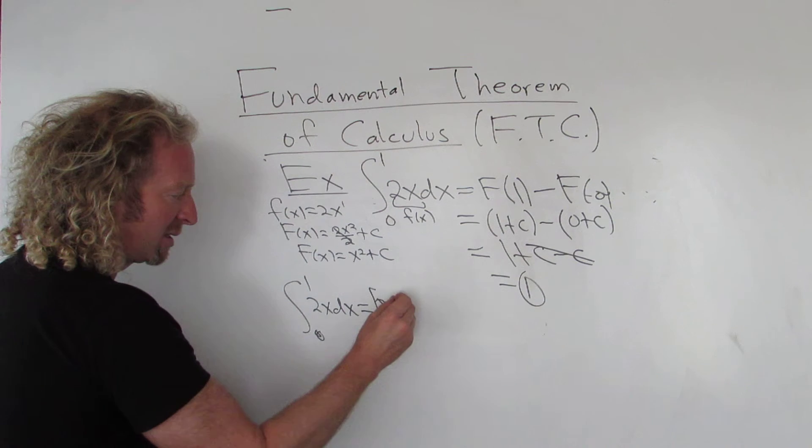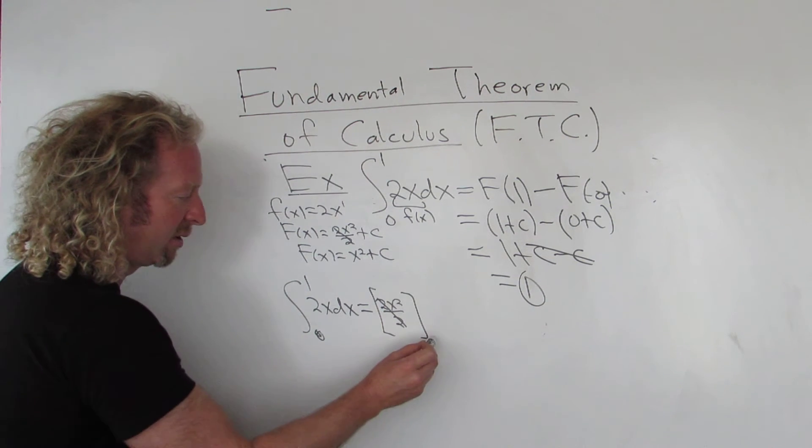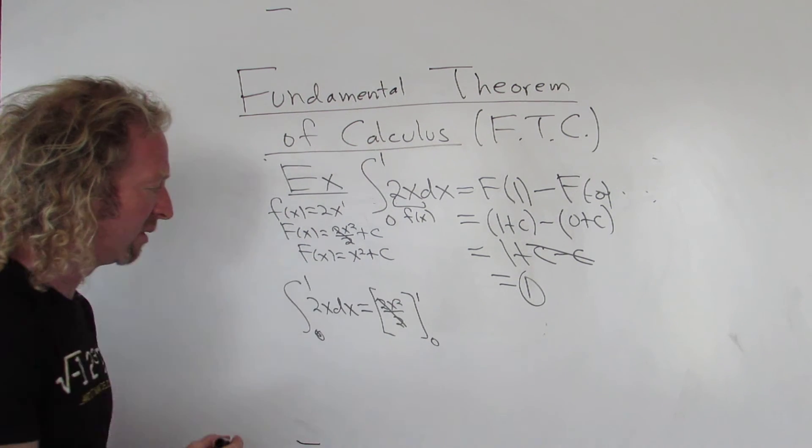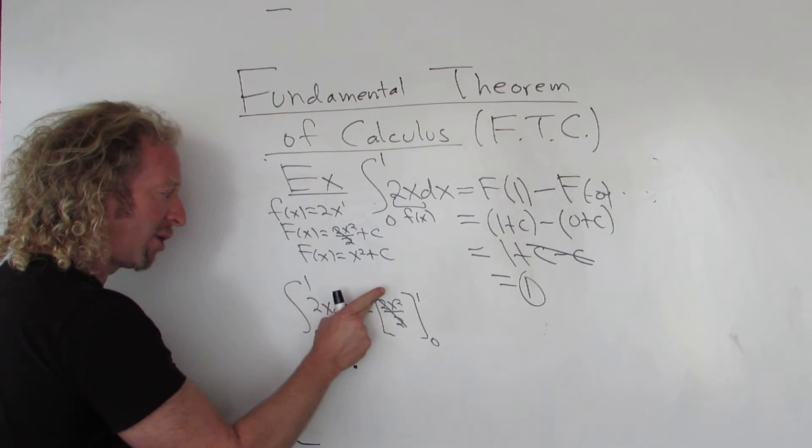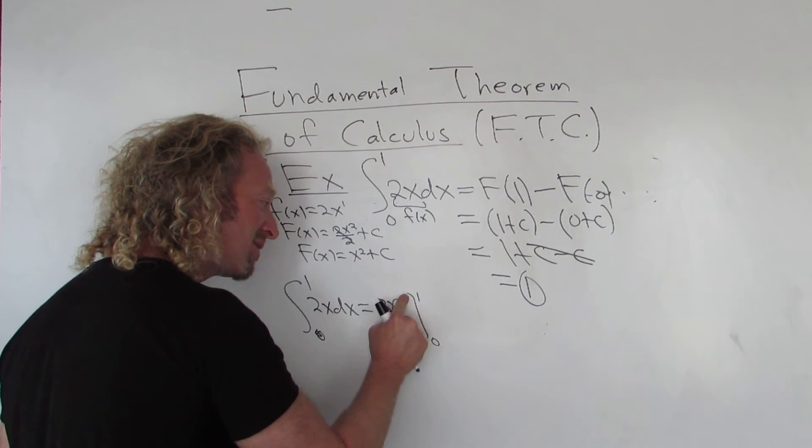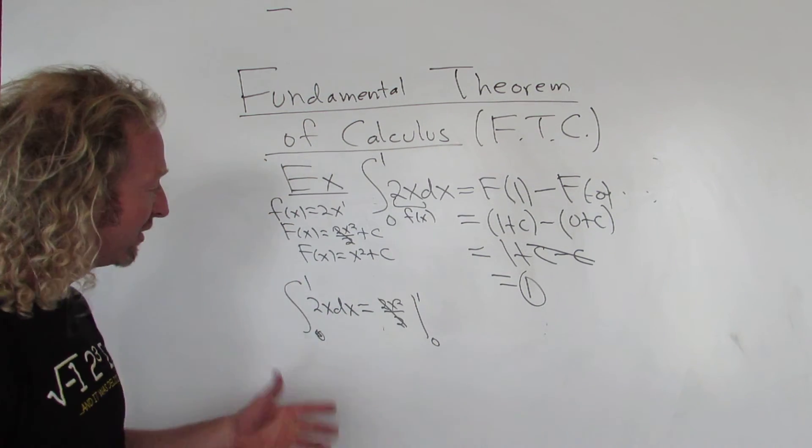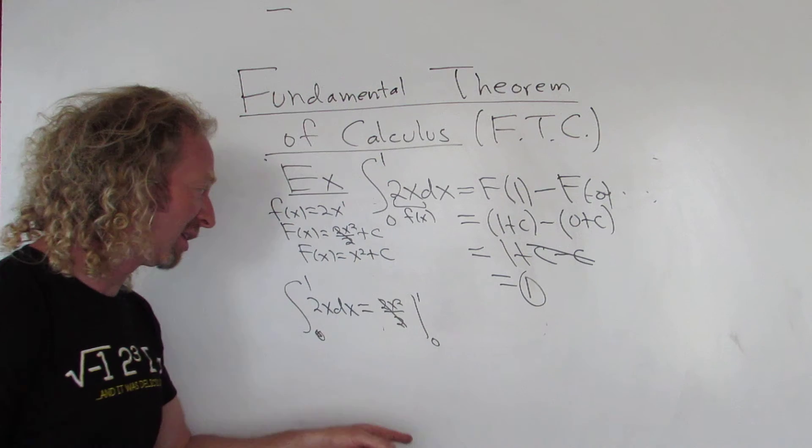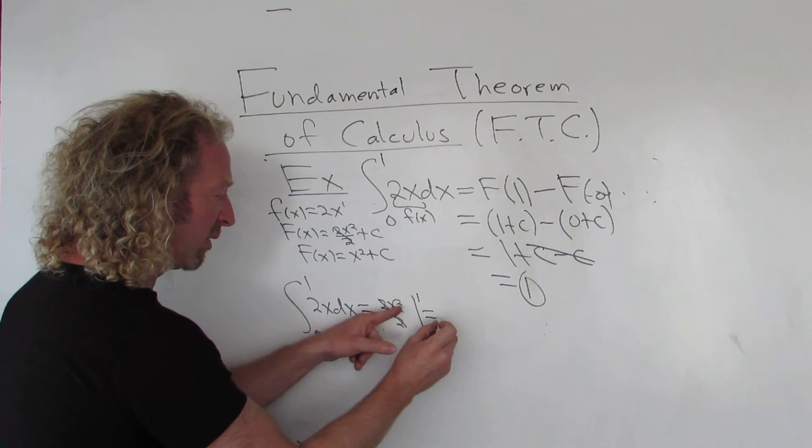And then there's a couple ways to do it. You can use two brackets, and then put this number here and this number here. Or you could use one bracket. Or if you're really lazy, you can just use a line. So those are the three ways I've seen. Double bracket, single bracket, or just a line.